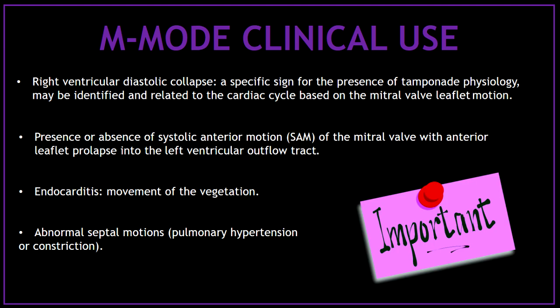The clinical use of the M-mode is endless. With M-mode, we can assess the right ventricular diastolic collapse, which is a specific sign for the presence of cardiac tamponade. You can also assess the presence or absence of systolic anterior motion of the mitral valve. The M-mode is very important to assess endocarditis because you can visualize the movement of the vegetation. Another important use of the M-mode is to assess abnormal septal motions due to pulmonary hypertension or constriction.